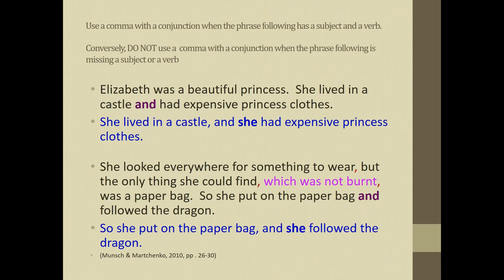So if I want to join these two sentences — Elizabeth was a beautiful princess, and she lived in a castle and had expensive princess clothes — I can use 'and' with a comma. There's no comma with 'and' when there's no subject after it. If I wanted to add a subject, then I'd be joining two complete sentences and would use the comma with 'and,' for example: she put on the paper bag and she followed the dragon — those are two complete sentences.